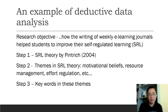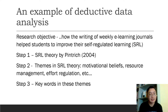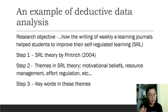In this research, the research objective is to understand how the writing of weekly e-learning journals can help students to improve their self-regulated learning — or in short, SRL. Step one: I need to choose an SRL theory. In this case, I've chosen SRL theory by Pintrich, 2004. Step two: I need to look at this literature and understand the themes in SRL theories.